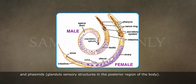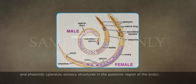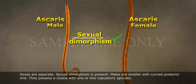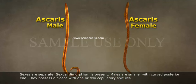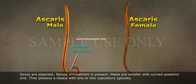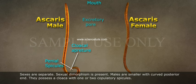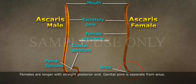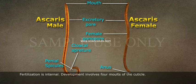Phasmids are glandulo-sensory structures located in the posterior region of the body. Sexes are separate and sexual dimorphism is present. Males are smaller with a curved posterior end and possess a cloaca with one or two copulatory spicules. Females are longer with a straight posterior end, and the genital pore is separate from the anus. Fertilization is internal.